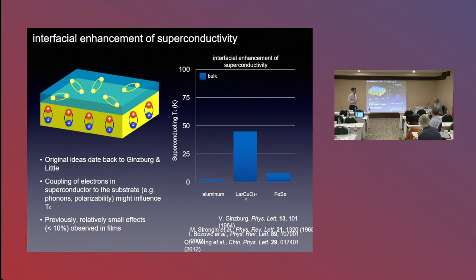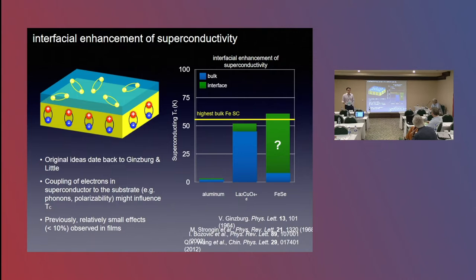These ideas were explored early on in thin metal films where people saw relatively small, modest enhancements. Later on, by Ivan Bozovich's group, they saw something on the order of 10% in cuprate heterostructures. But this iron selenide material exhibits a very large enhancement, multiple factors above the bulk TC, and so the motivation of this work is trying to understand a little bit more about this system.